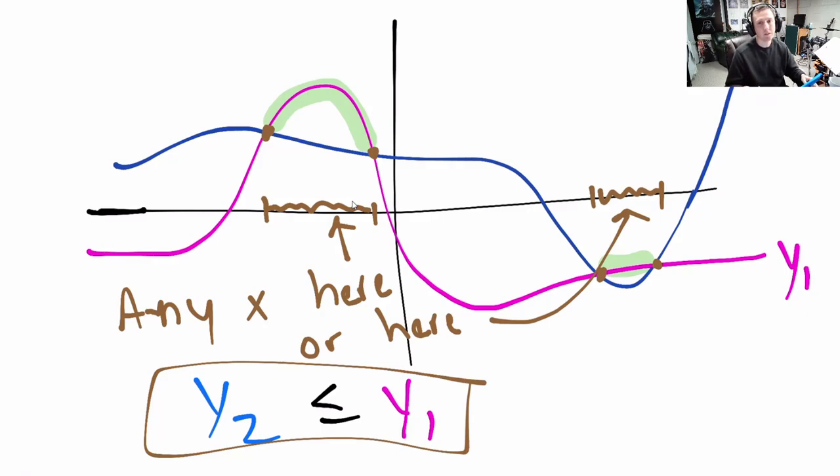With equalities, you're just looking for that one x, probably, or that list of x's, or maybe none. With inequalities, you're usually looking for intervals where the entire section of one graph is above another or below another. And so your answer is going to be a list of x's or is going to be an interval of x's.